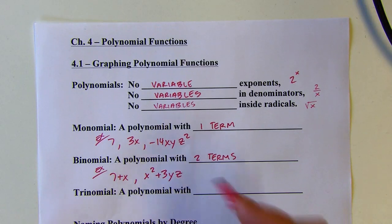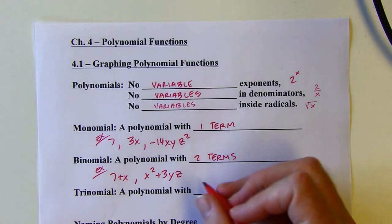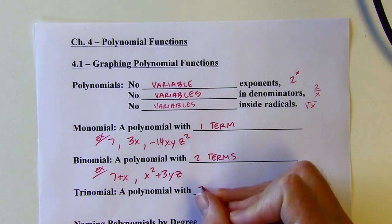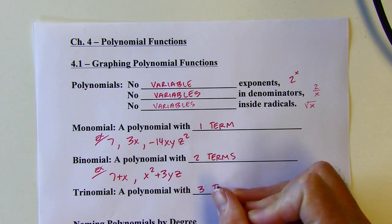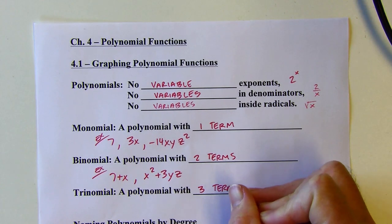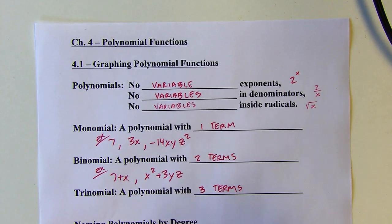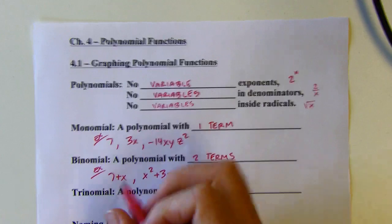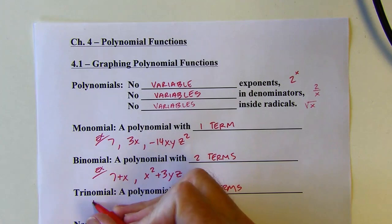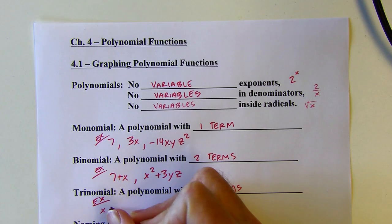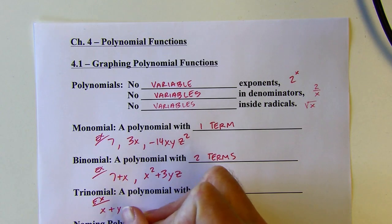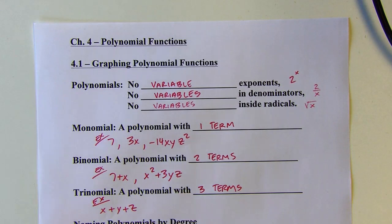A trinomial, just like a tricycle, is going to have three terms, just like a tricycle has three tires. So x plus y plus z — three terms there.